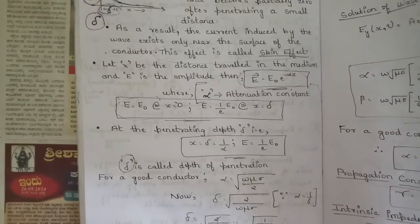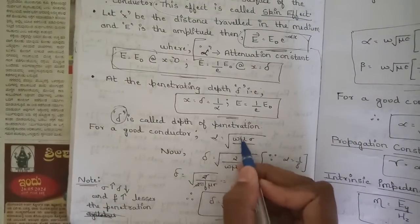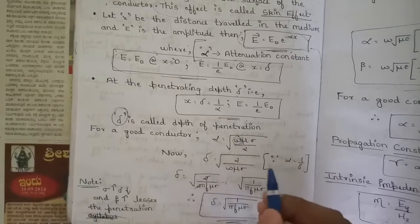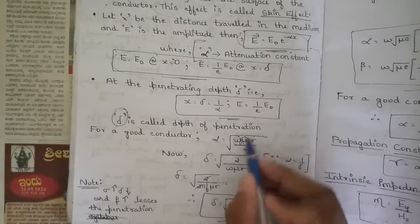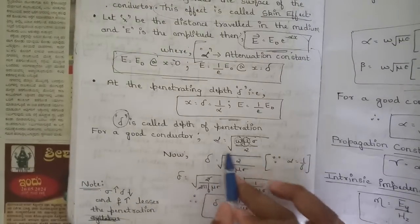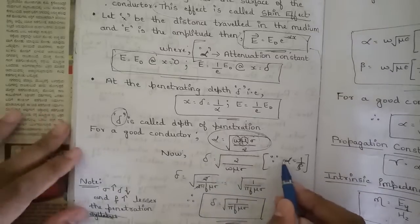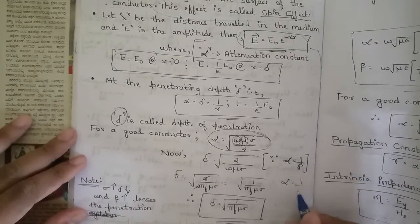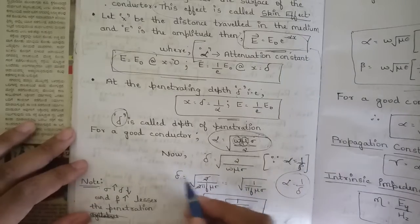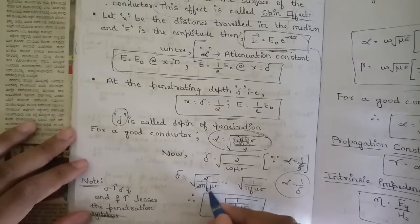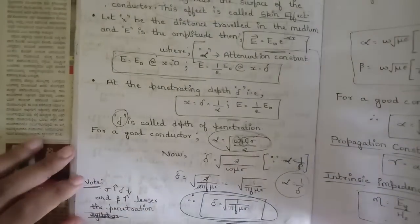For a good conductor, the attenuation constant α = √(ωμσ/2), where ω is the oscillating frequency, μ is the permeability, and σ is the conductivity. Since α = 1/δ, taking the reciprocal gives δ = √(2/ωμσ). Replacing ω with 2πf and simplifying, we get δ = √(1/πfμσ). This is the expression for depth of penetration.